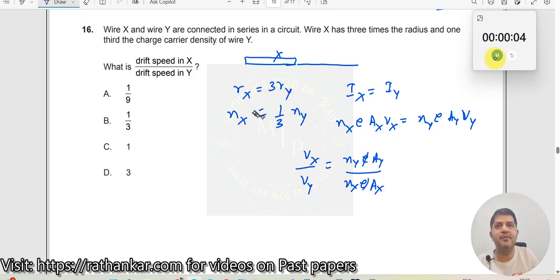E and e goes away. Let us substitute one by one. R_x equal to three times r_y. Let us now write this as n_y into pi r_y square divided by n_x into pi r_x square. Therefore, this pi and this pi goes away.